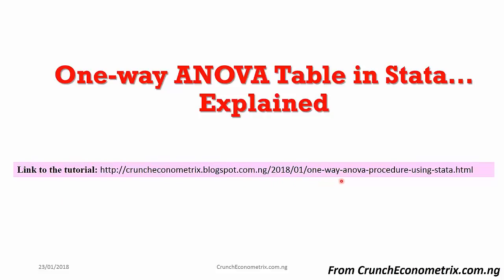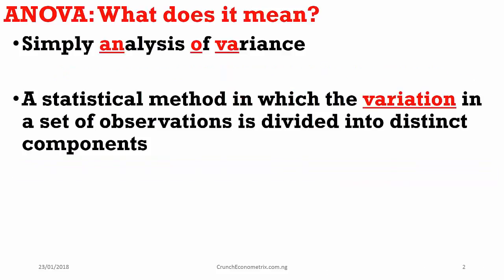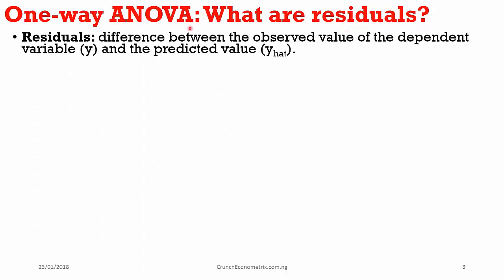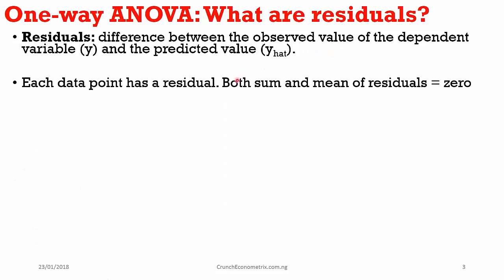So what is ANOVA? It simply means analysis of variance, a statistical method in which the variation in a set of observations is divided into distinct components. In ANOVA we use the term residuals. Residuals are the difference between the observed value of the dependent variable and the predicted value y-hat. Each data point has a residual and the sum and mean of these residuals are equal to zero.